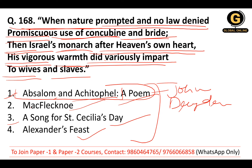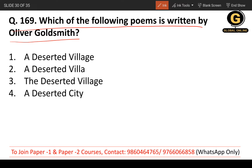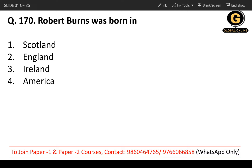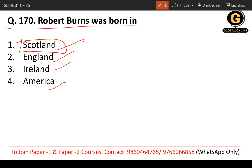Question 168: Which of the following poems is written by Oliver Goldsmith? The correct answer is The Deserted Village — the third option. Question 169: Robert Burns was born in which country? The options are Scotland, England, Ireland, and America. The correct answer is Scotland — the first option.